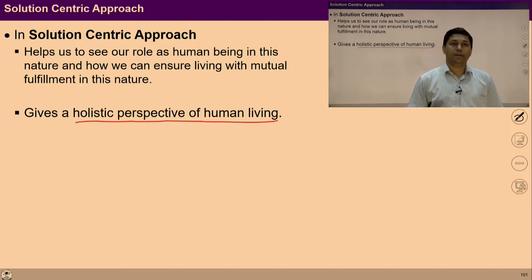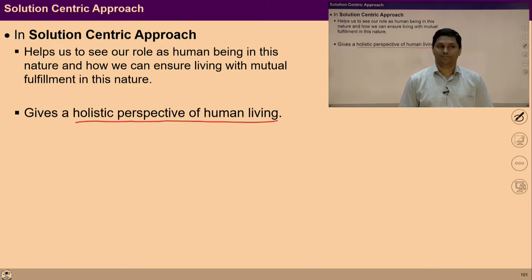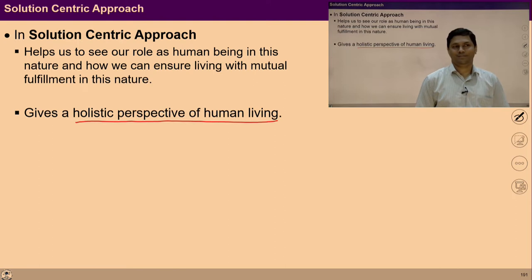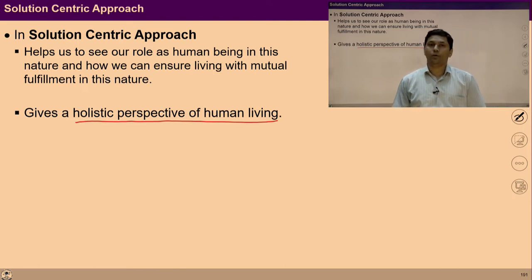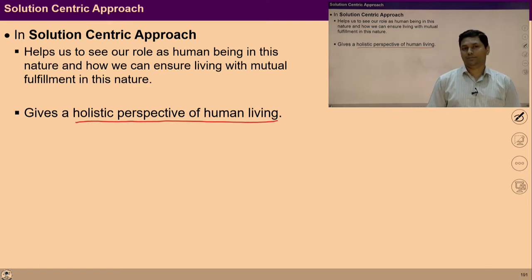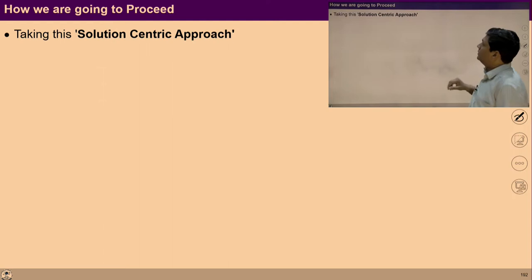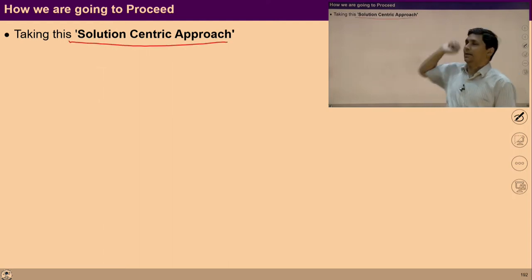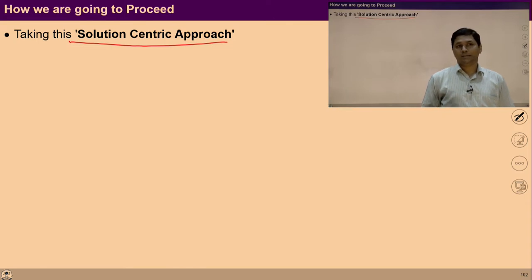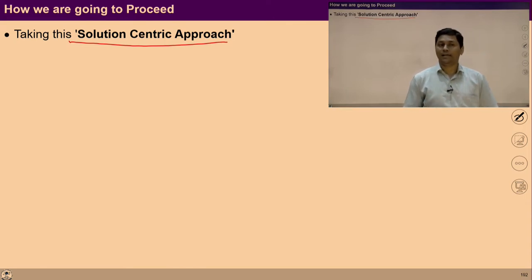It may happen that there is some priority, so if urgent, we may give priority to work on individual solutions to solve individual problems. The prevailing approach today is the problem-centric approach. However, the approach we are going to take here for critical analysis is the solution-centric approach. Taking the solution-centric approach, we try to develop a holistic perspective about human existence, and through this holistic perspective we have been able to identify our goals at all four levels of living.